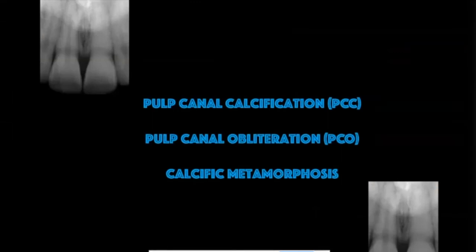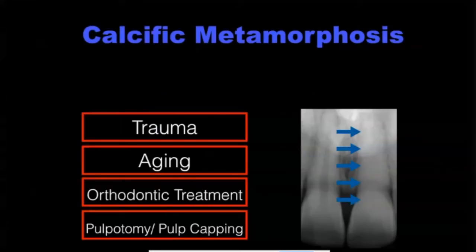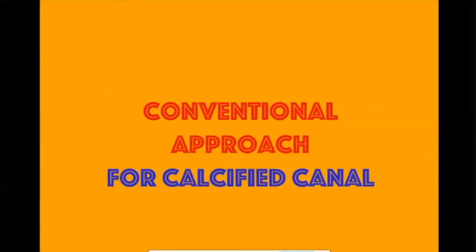For calcified canal management, you will find many terminologies: root canal calcification, obliteration, and calcific metamorphosis. The etiology can be trauma, age, orthodontic treatment, pulpotomy, or pulp capping. Usually we take a microscope, use ultrasonic tips, and with experience try to remain in the center of the canal. Many use small-size files and canal scouting. But guided endodontics can help in these difficult cases.